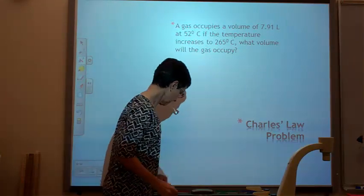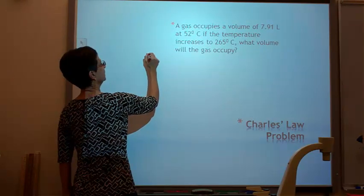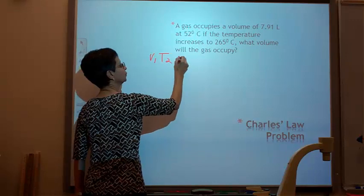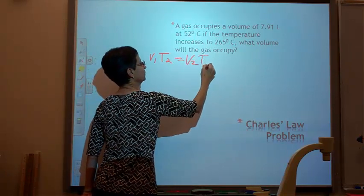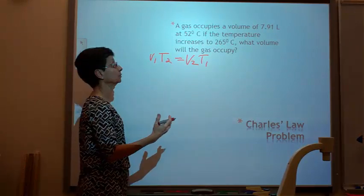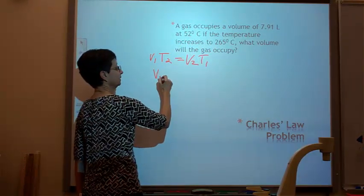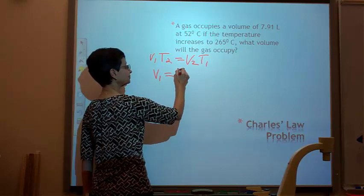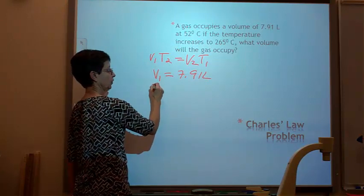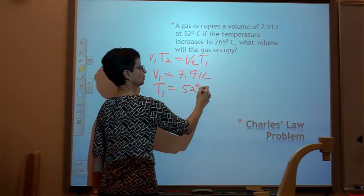So we're going to solve a problem, and we're going to start out with our formula, of course, and it is V1 T2 equals V2 T1. Now let's write the variables. What do we have? A gas occupies 7.91 liters. That's my V1. V1 equals 7.91 liters at 52 degrees. So my T1, my initial temperature, is 52 degrees Celsius.